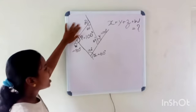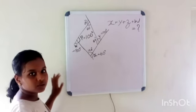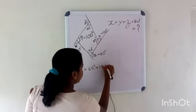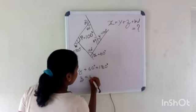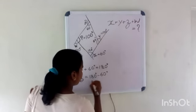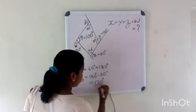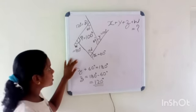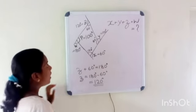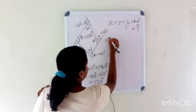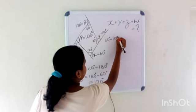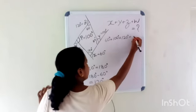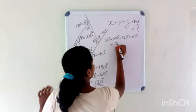Finally, we find the value of Z. This is also a linear pair, so Z plus 60 degrees equals 180 degrees, and Z equals 180 minus 60, which equals 120 degrees. Now the sum: X plus Y plus Z plus W equals 60 plus 100 plus 120 plus 80, which equals 360 degrees.